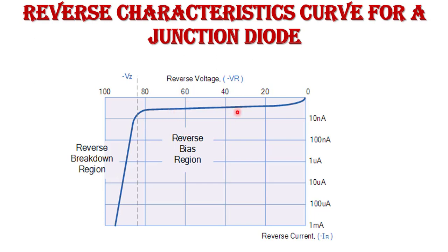As reverse voltage increases, the reverse saturation current remains constant at I0 if temperature is constant, because the reverse saturation current does not depend on reverse voltage but depends on temperature. When the reverse voltage reaches the breakdown voltage, a suddenly large reverse current flows and the device works in the breakdown region. This large current should be avoided as the diode may be damaged due to excess power dissipation. Typically, the reverse breakdown voltage of a PN junction diode is 50–200 volts.